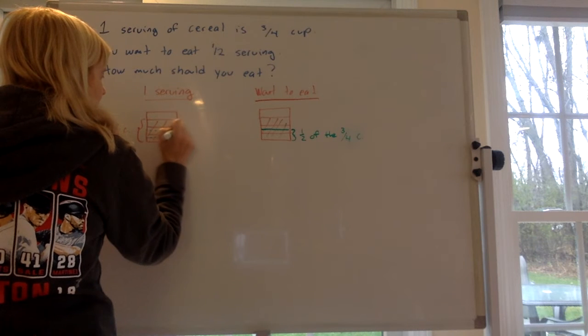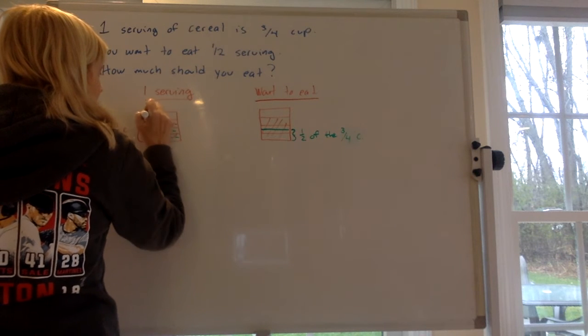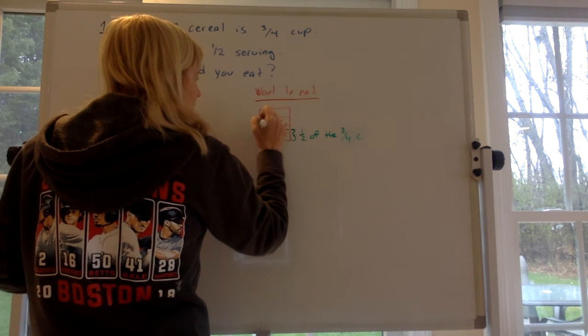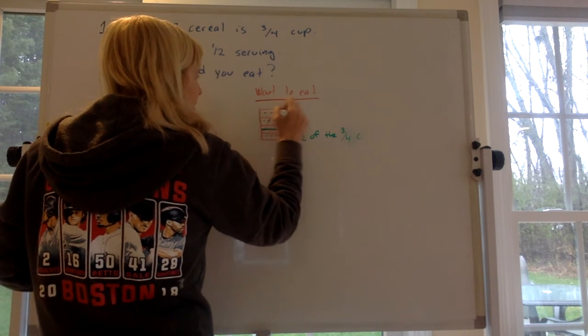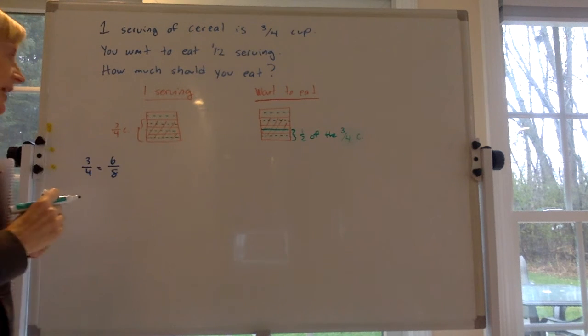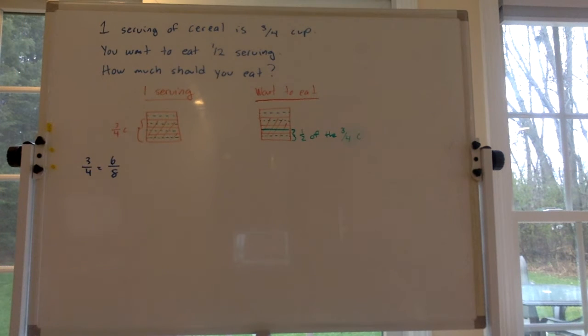We would just put a line down the middle of each of these. And we can do that here too. Ooh, there's already one there. So now if you look at each of these, there's one, two, three, four, five, six, seven, eight blocks.